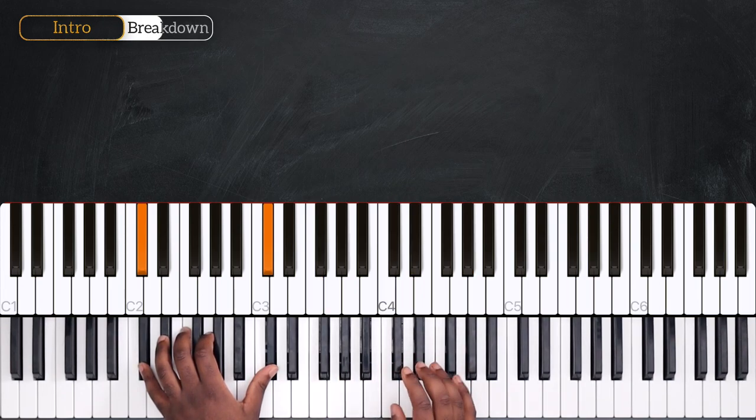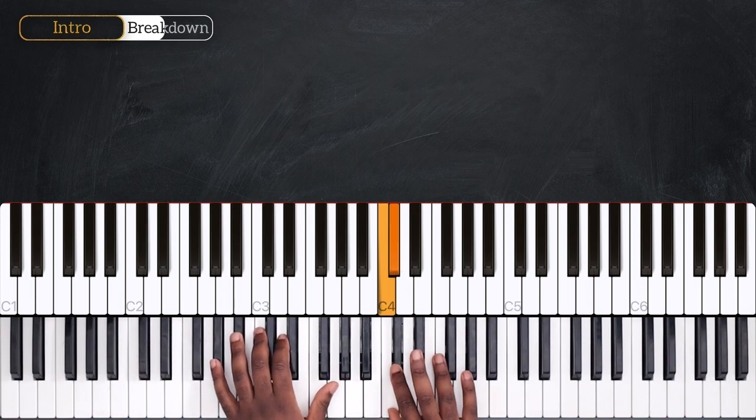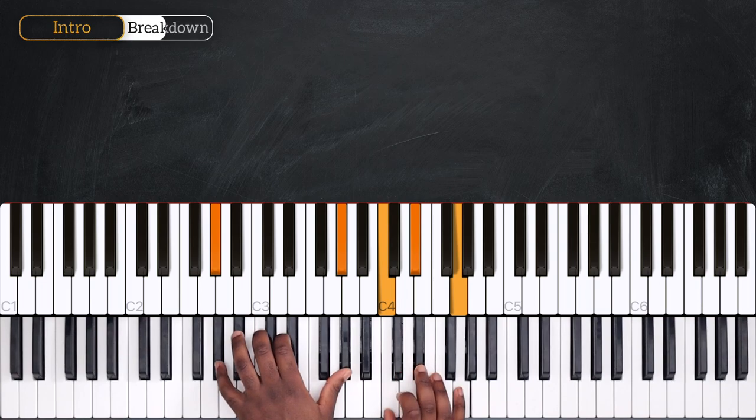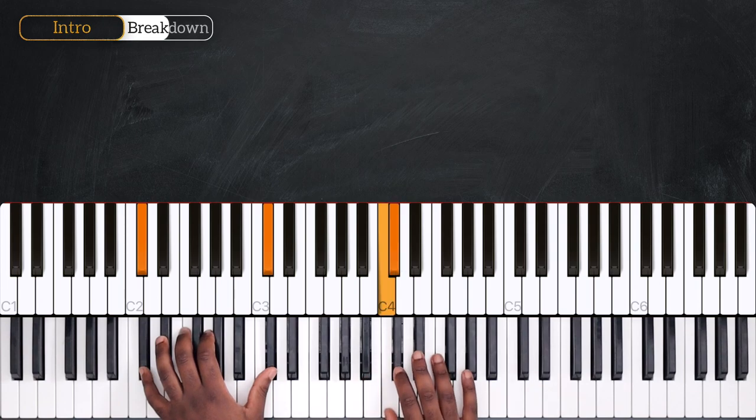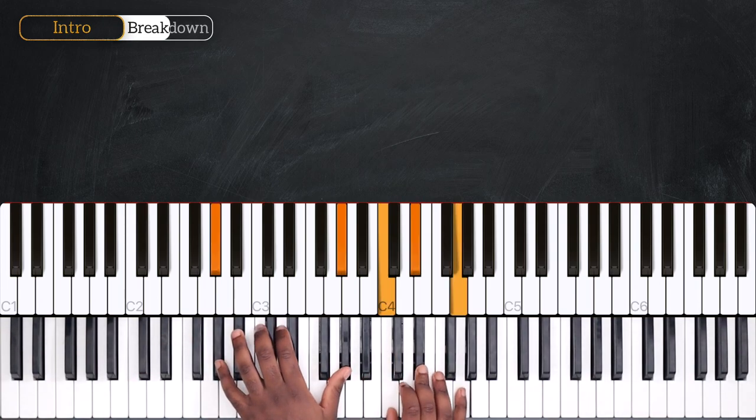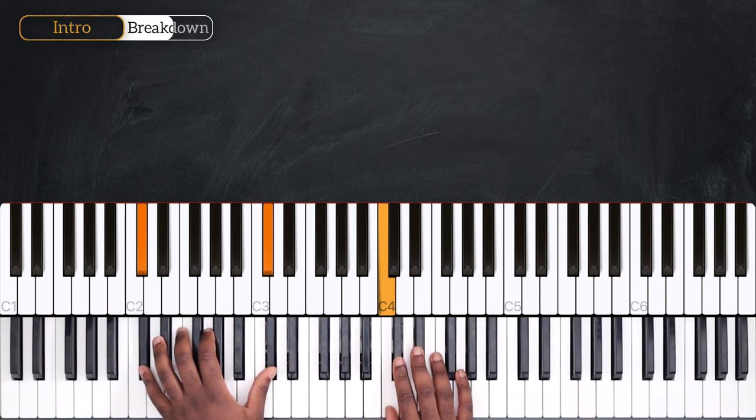Then we're going to repeat with the same melody line before Ab. So again. 1, 2, 3, 4. 1, 2, 3, 4. 1, 2, 3, 4. 1, 2, 3, Db. 1, 2, 3, 4.